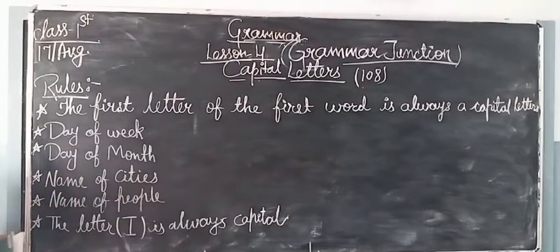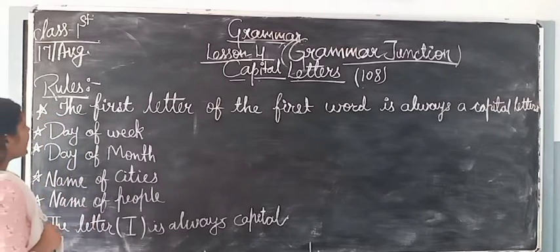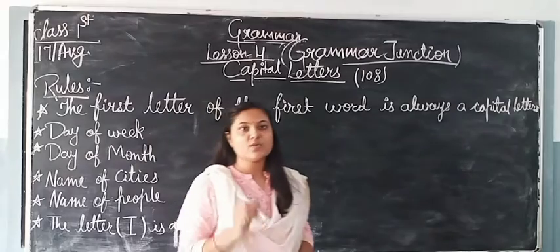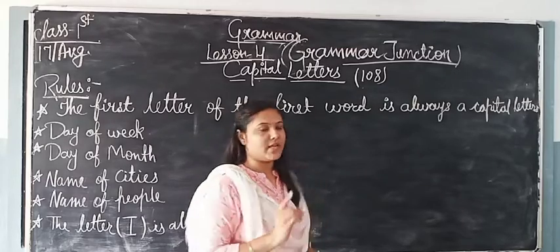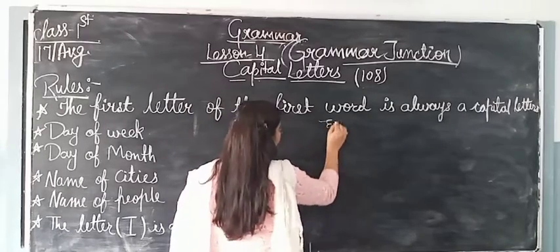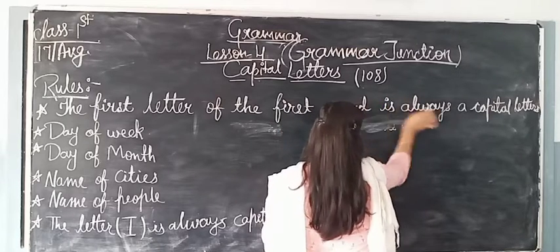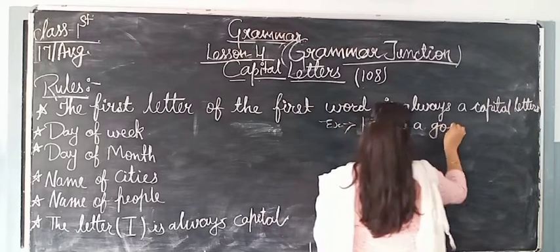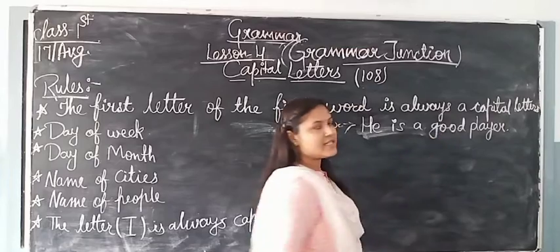The first rule is about Capital Letters. The first rule: the first letter of the first word is always capital. When a sentence starts, the first letter of the first word is capital. For example, 'he is a good player' — the first word starts with a capital letter.